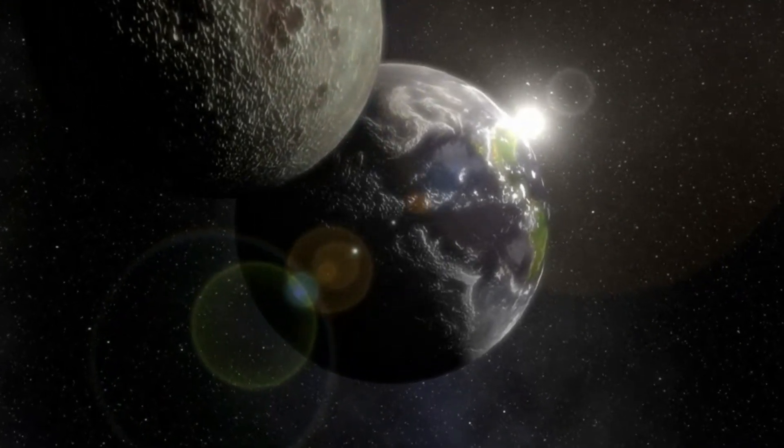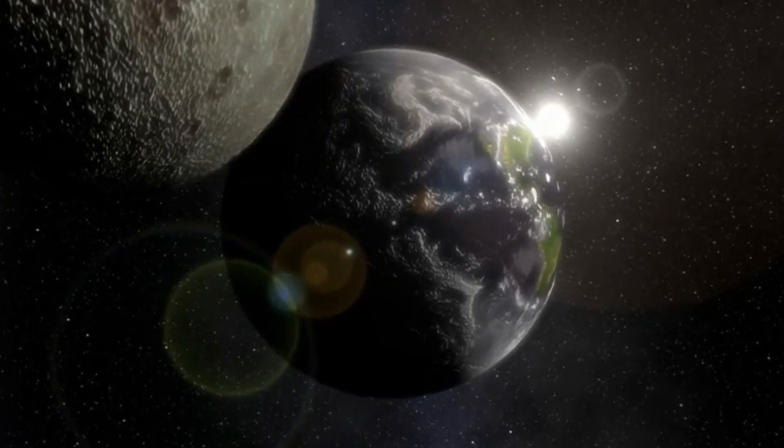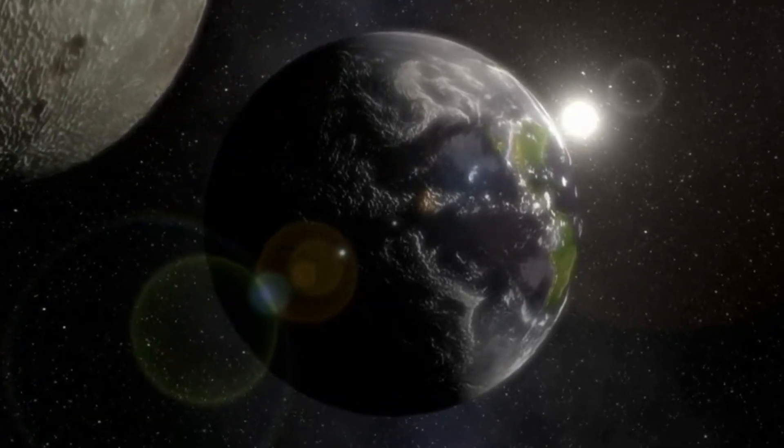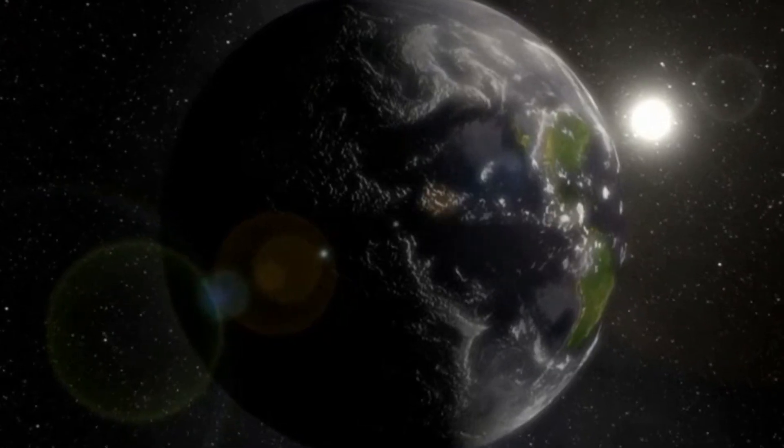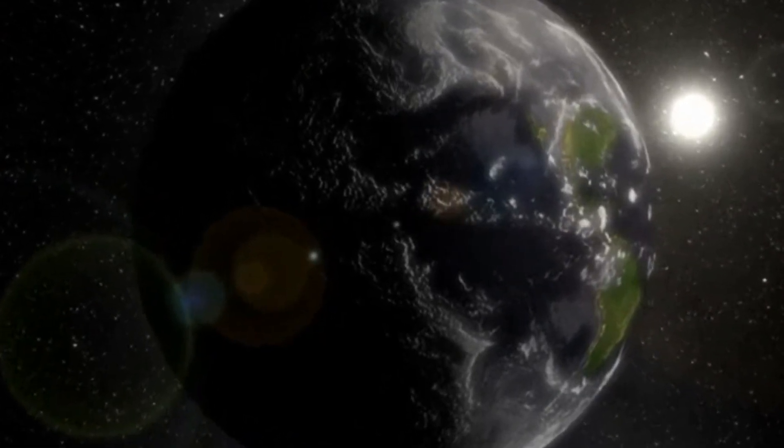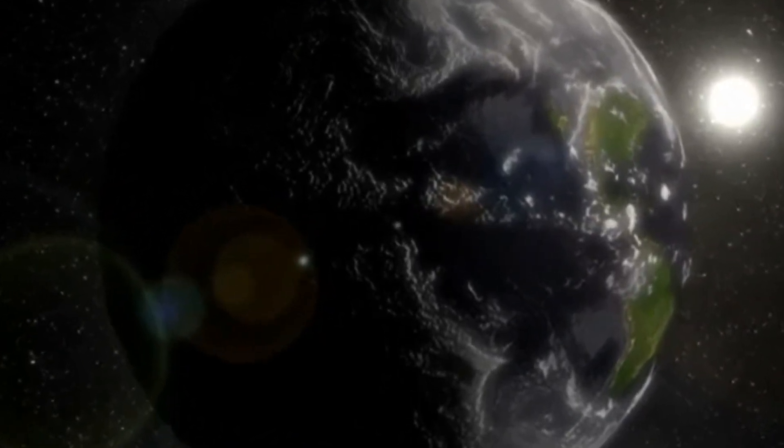Imagine a planetary system where the planets are so light they're compared to cotton candy. Welcome to the Kepler-51 system, a system that's already baffling astronomers with its three ultra-low-density SuperPuff planets.